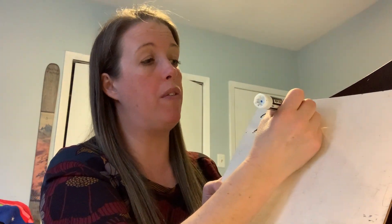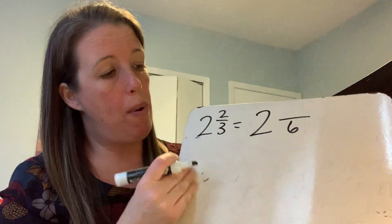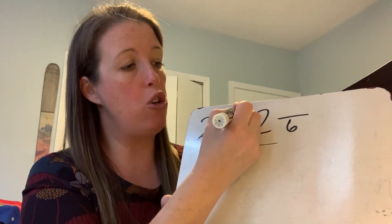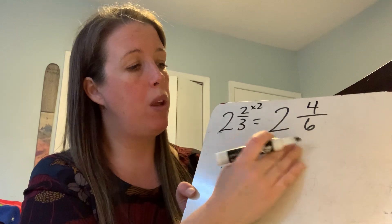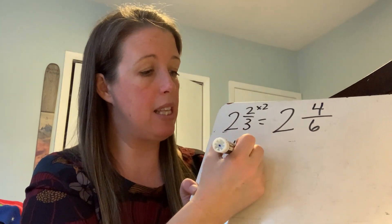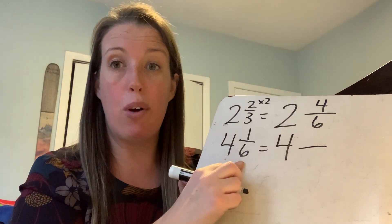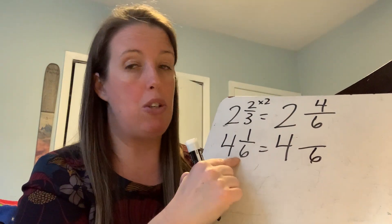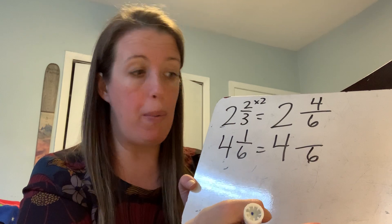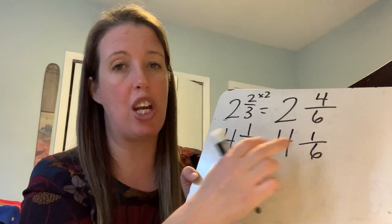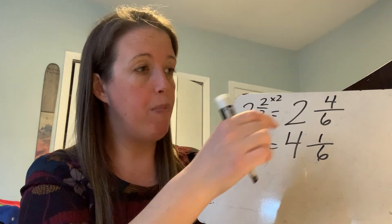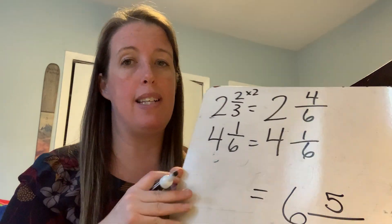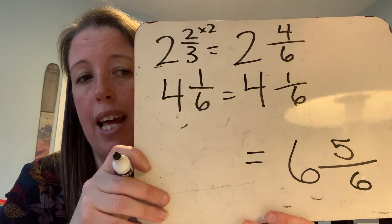Two and two-thirds is equivalent to two and how many sixths? I used to have a denominator of three — I multiply it by two to make it six. So I multiply my numerator by two and it becomes four. Then for four and one-sixth: it's already sixths, so I don't have to change a thing — multiply by one, one times one is one. Now adding: four-sixths plus one-sixth equals five-sixths, and two plus four is six. So my final answer is six and five-sixths.